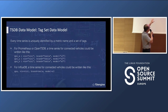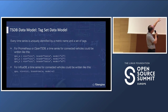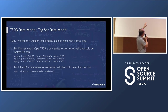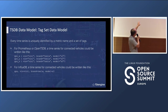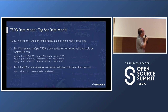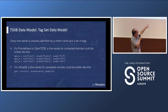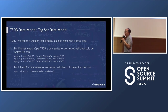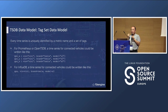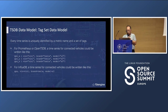For example, for a connected vehicle in Prometheus or OpenTSDB, a time series could be written with a vehicle identification number and tags like brand and model. For InfluxDB, a time series for a connected vehicle can be written with the metric, vehicle identification number, brand, and tags. So every time series is uniquely identified by the metric name and the set of tags.